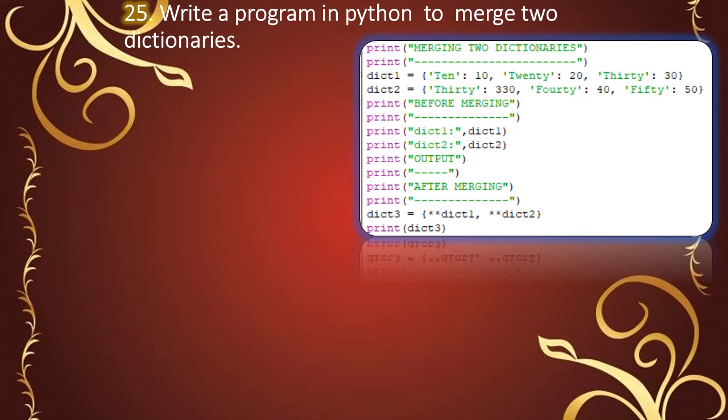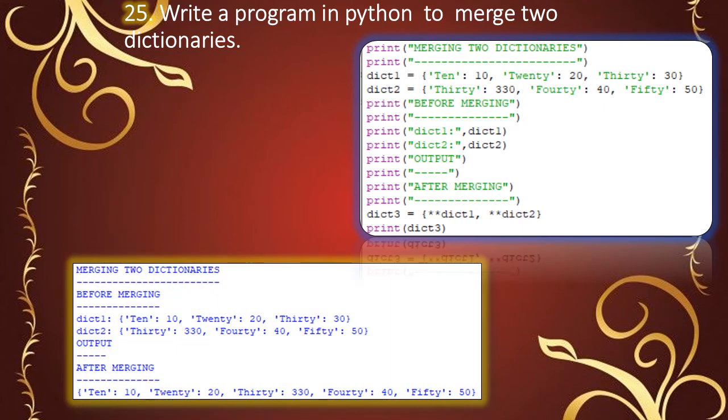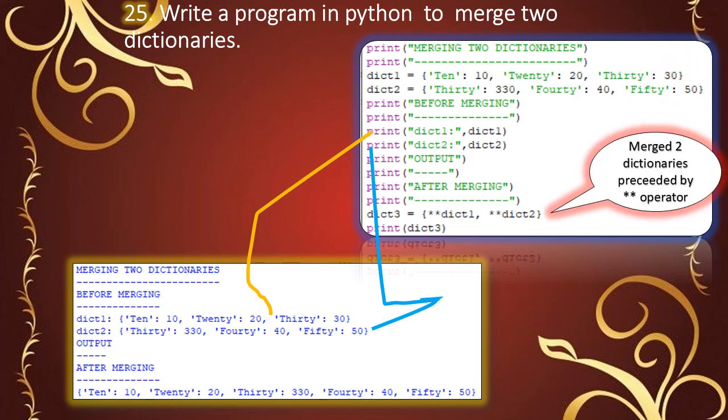The last program merges two dictionaries. We create dictionary one and dictionary two. Dictionary one has keys with numeric values, and dictionary two has different keys with their values. To merge them, we use the double star operator: {**dict1, **dict2}. Using this operator, we can combine the dictionaries.